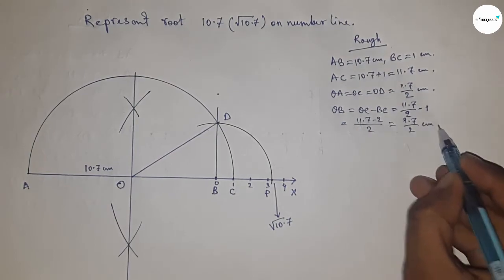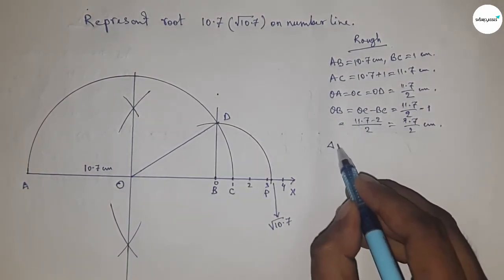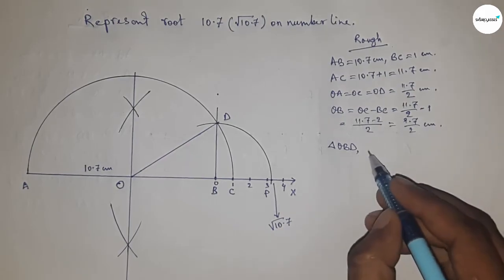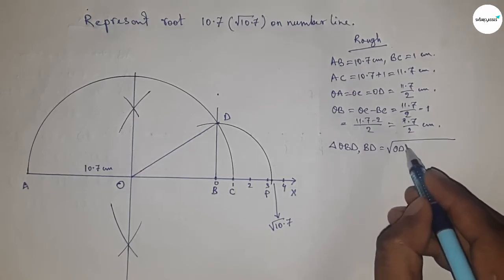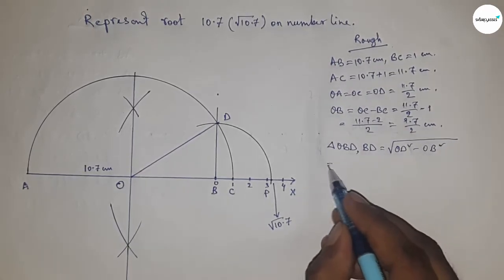Now from right angle triangle OBD, we can write BD equal to root over OD square minus OB square. That's mean hypotenuse square minus base square. Now putting the value of OD and OB.